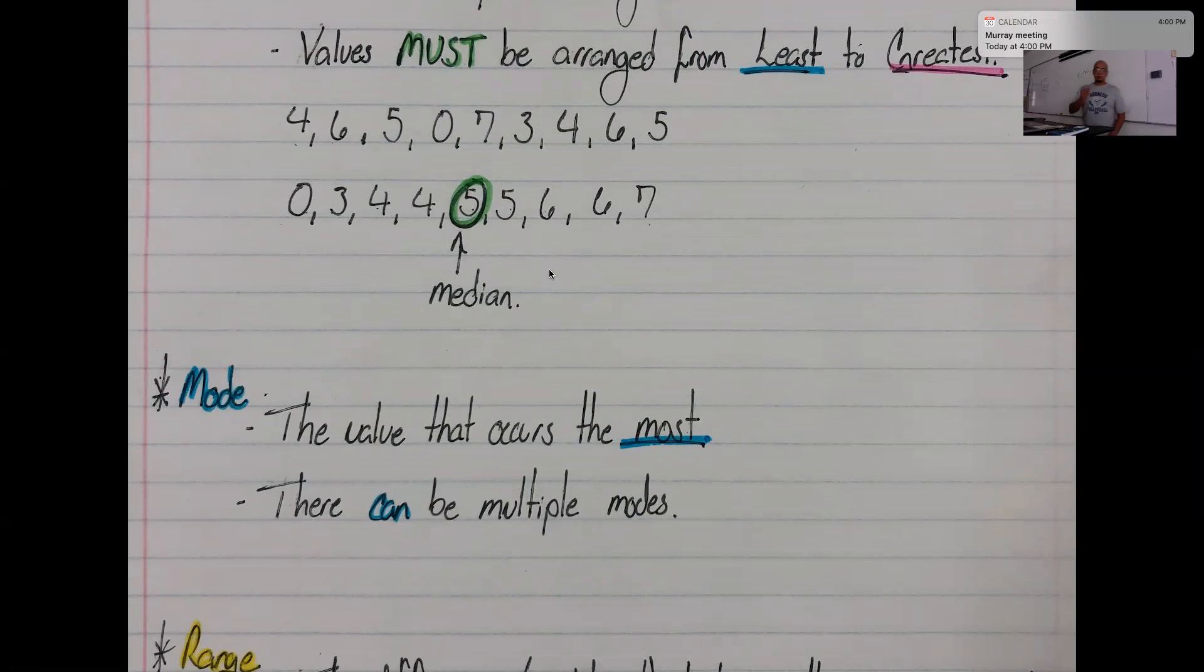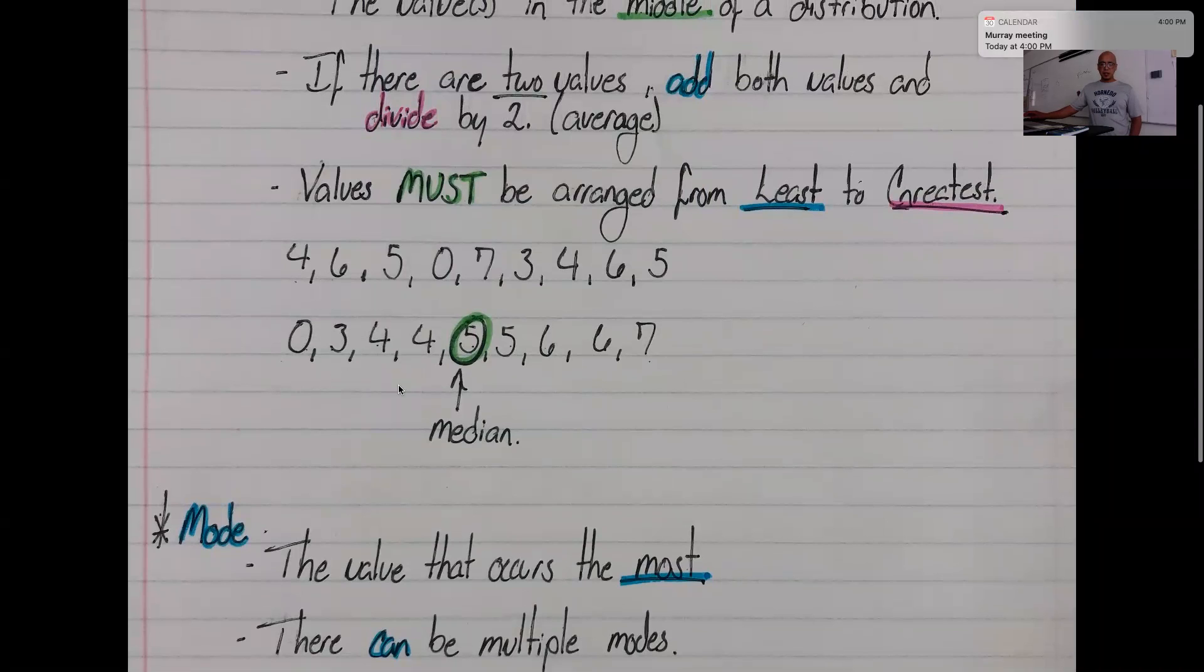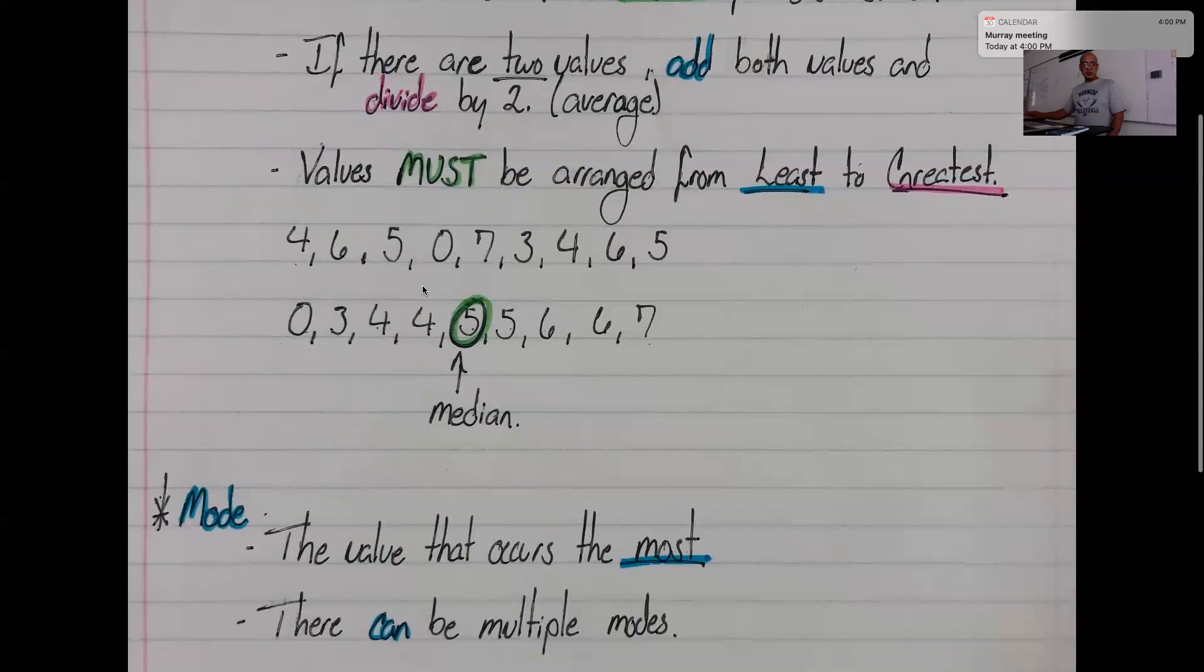Moving on. Mode means the most. The one that occurs the most often. There can be multiple modes. You can have multiple numbers that happen more than once. For example, up here, notice how we have 1 zero, 1 three. We have 2 fours, 2 fives, and 2 sixes. So the modes up here would be 4, 5, and 6. If you add an extra 5, then we would have 3 fives, so 5 would be the most. It's not the highest number, not the maximum, but the one that occurs the most often. If we have 4 zeros, then 0 would be the mode.